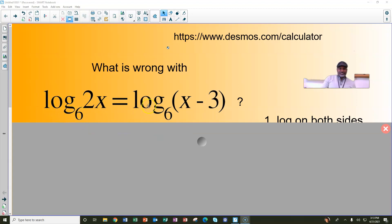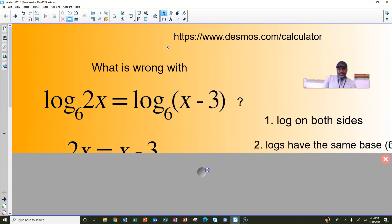Log base 6 of 2x equals log base 6 of x minus 3. First of all, we notice the log is on both sides, and they both have the same base, which is 6.